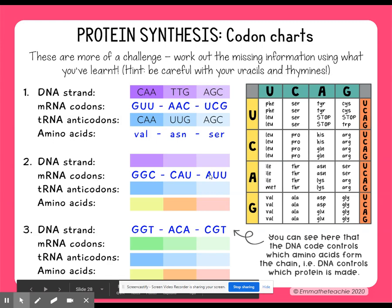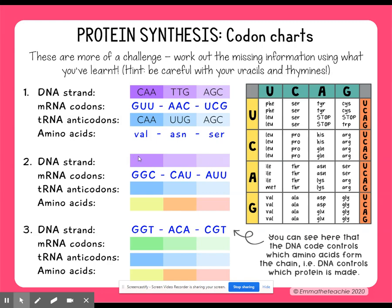For messenger RNA codons, they've been given to you. We're going to work backwards and do the DNA strand, remembering G and C always pair together, and instead of a U you're going to be using T for DNA. So GGC pairs with CCG. Then we have CAU — C pairs with G, A pairs with T in DNA, and the U pairs with an A — so we have GTA. And then AUU: A pairs with T, and both uracils in RNA pair with A in DNA, so we have TAA.